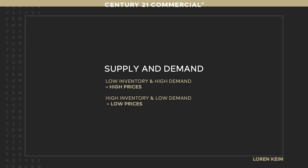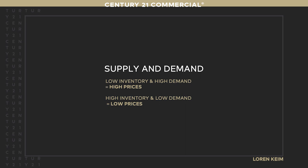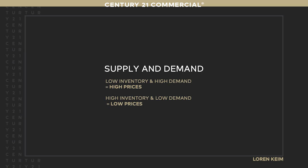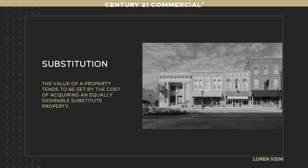The second principle is supply and demand — we all know this. There aren't enough homes in the residential market, so prices are rising. In commercial right now, warehousing is at a premium in some parts of the country — it's doubled in price in the last 18 months in some areas. Office space is going the other direction as people work from home more. Supply and demand really controls pricing. The third principle is substitution: the value of a property tends to be set by the cost of acquiring an equally desirable substitute property. If I can buy a different warehouse down the street, I'm going to.